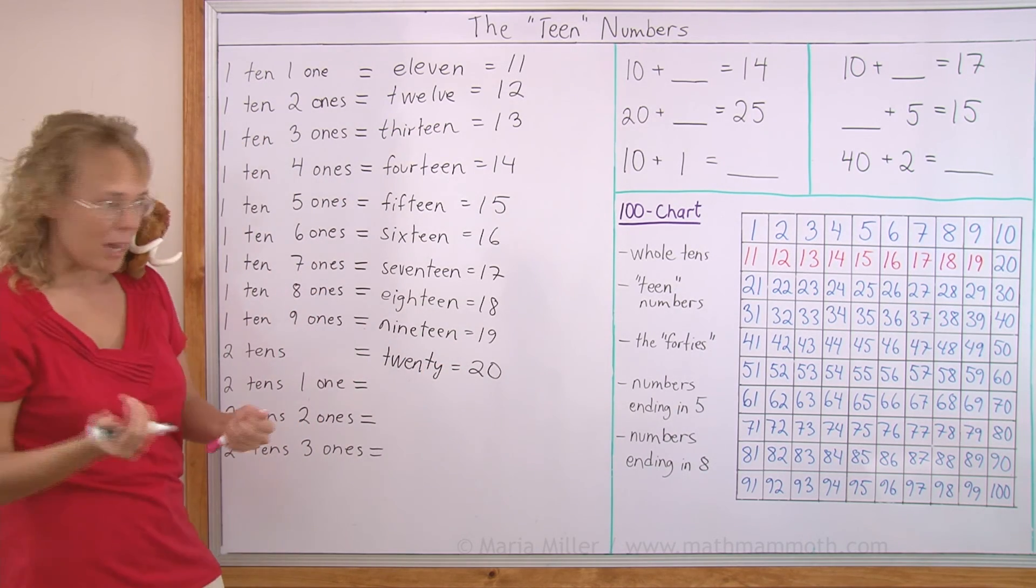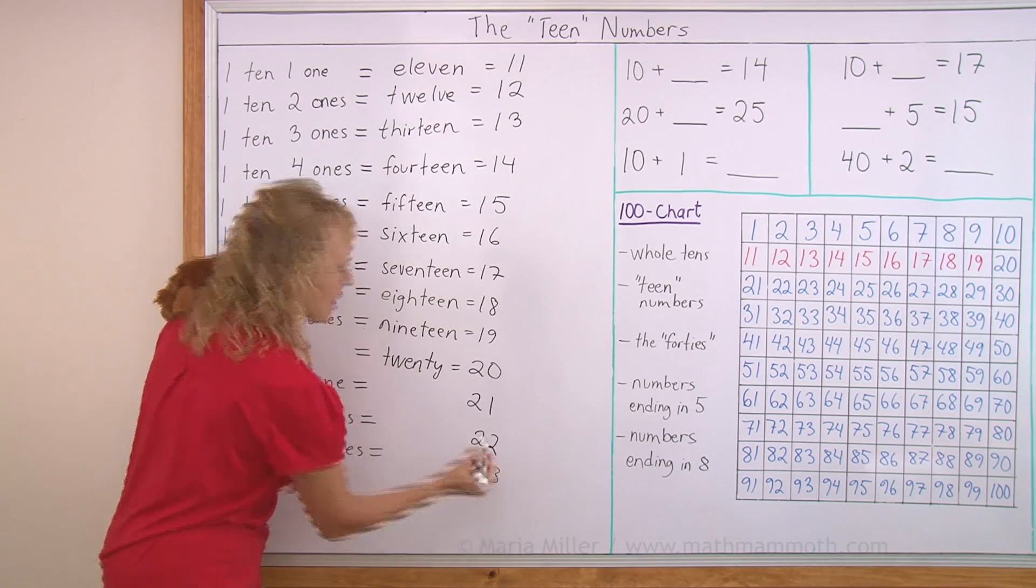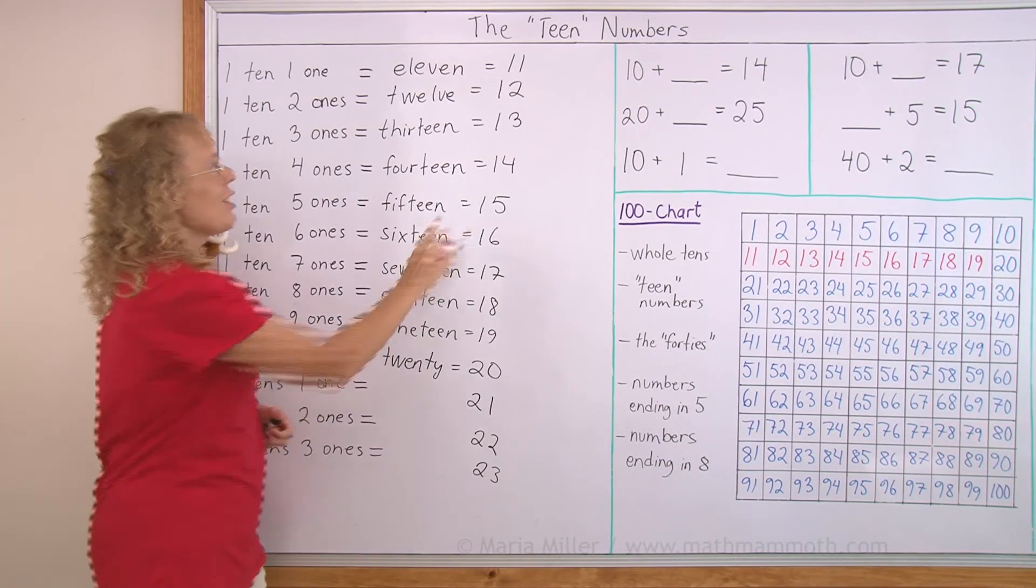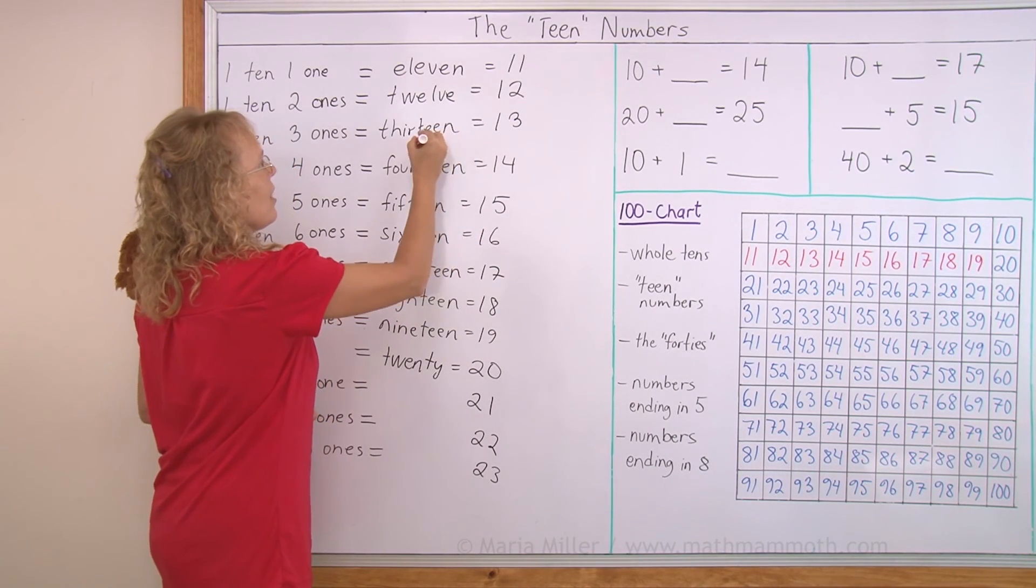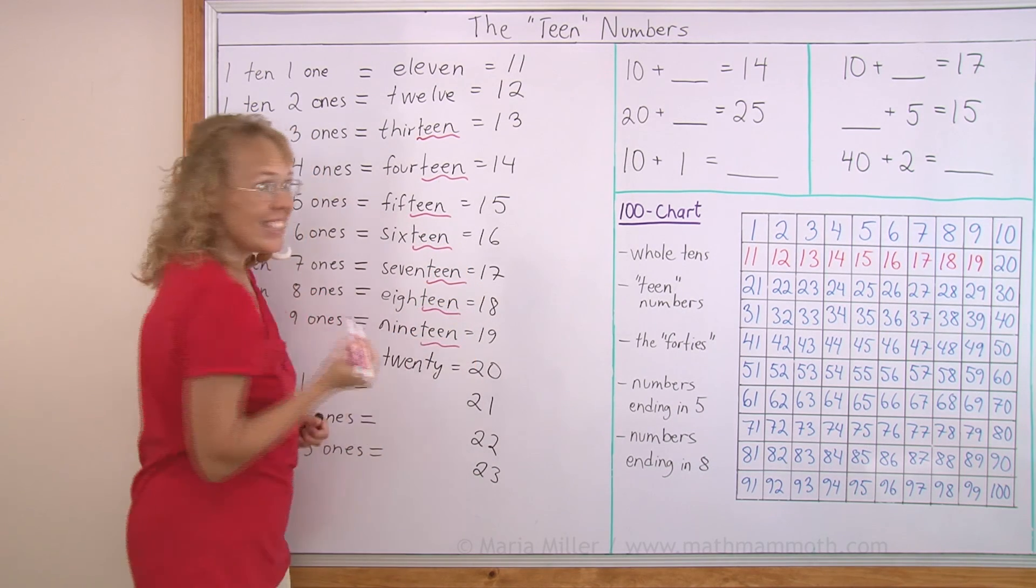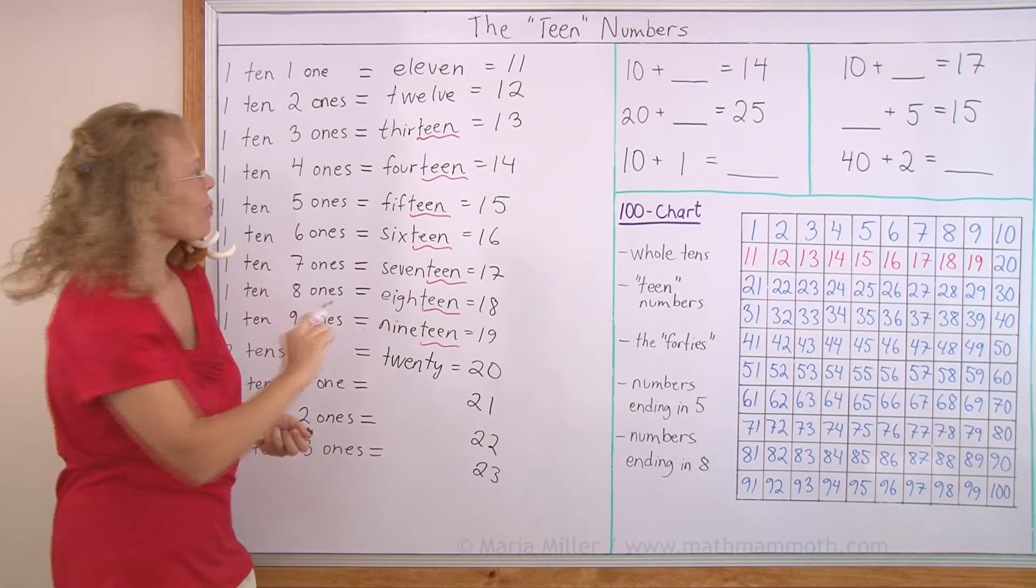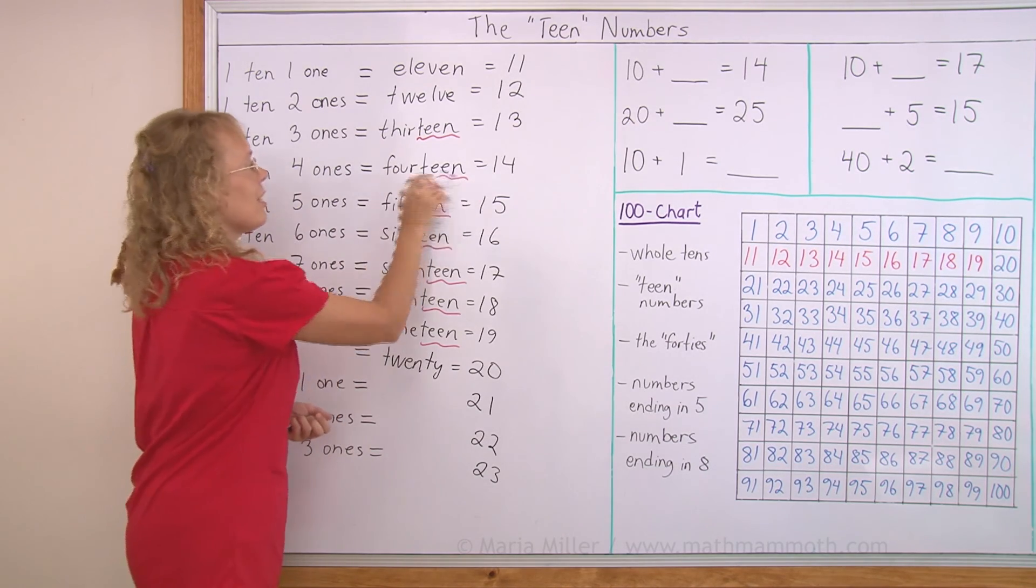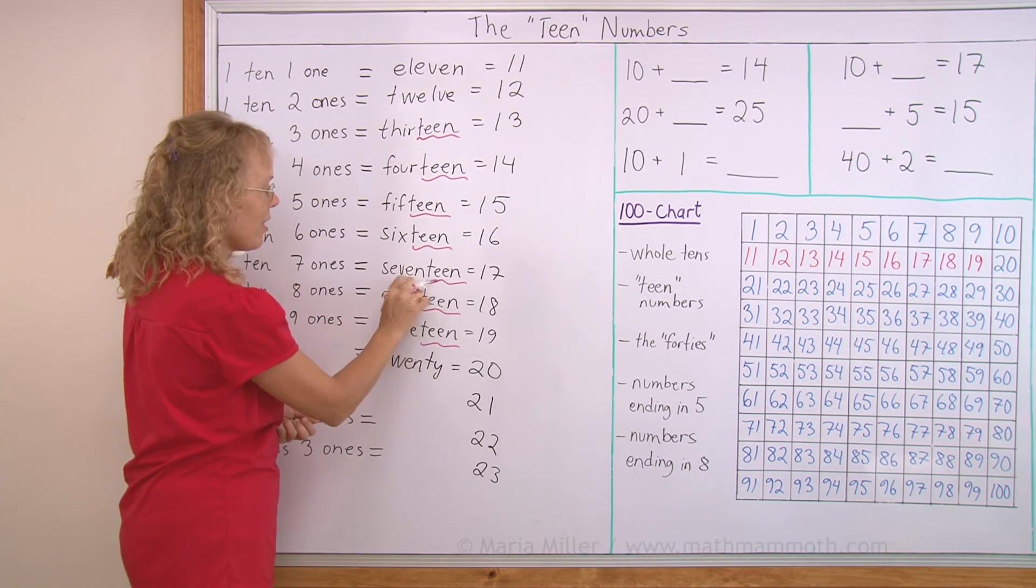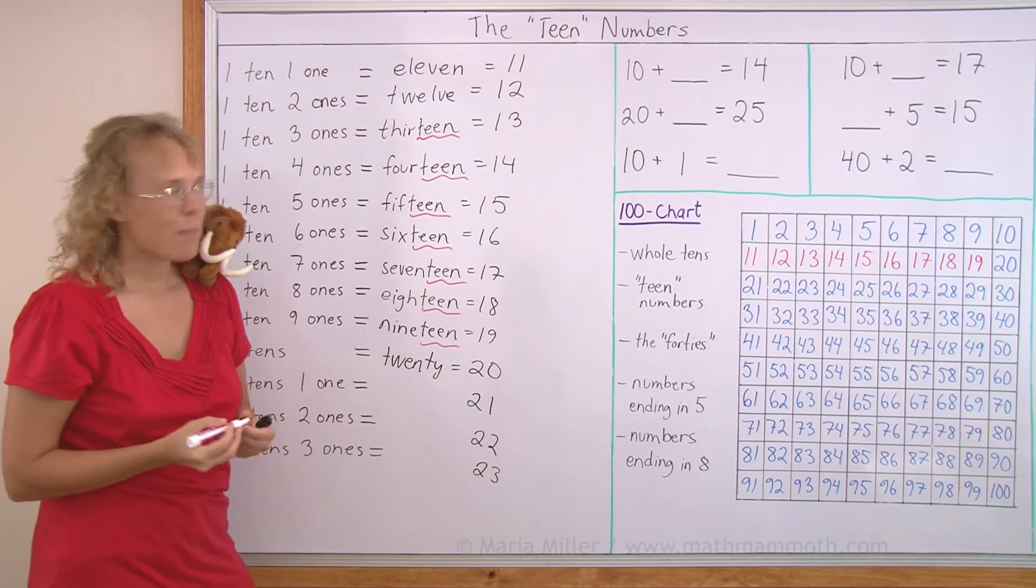Okay, then we would have 21, 22, 23 and so on. Let's look at those teen numbers again. 13 means 1 ten and 3. Think of this teen here as 10. It comes from the word 10. So this 13 is actually 10 and 3. 14 is actually 10 and 4. And this is 10 and 5, 10 and 6, 10 and 7, 10 and 8, 10 and 9, and then 2 tens or 20.